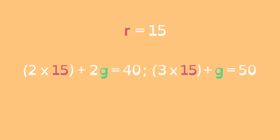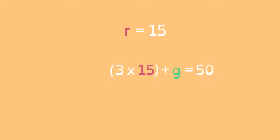Now that we know the value of one variable, we can solve for the other variable. When we solve the equation for g, we can see the result is 5.